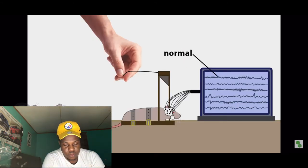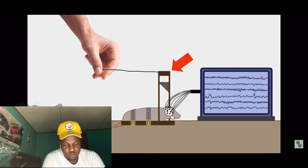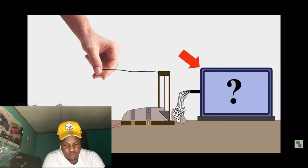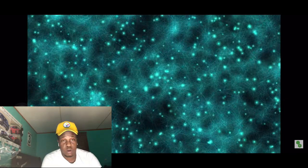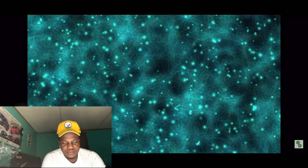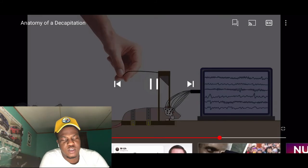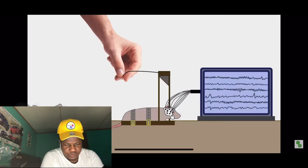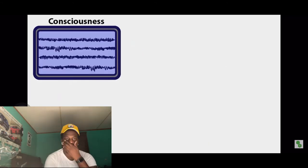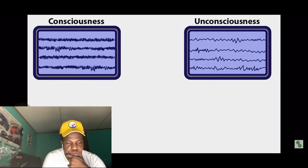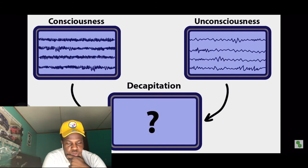Ideally, the readings would show normal electrical activity, then decapitation, followed by either continued electrical output or none at all. The EEG is the best measurement of consciousness after decapitation, because if there's no electrical activity in the brain — i.e. no neurons firing — how can you be conscious and aware? Two groups of rats were used: one was conscious before decapitation, and the other was made unconscious using anesthetics. Since the unconscious group would be producing unconscious brainwaves before decapitation, the scientists could use this to compare to the post-decapitation brainwaves, to determine if they were truly conscious or unconscious.